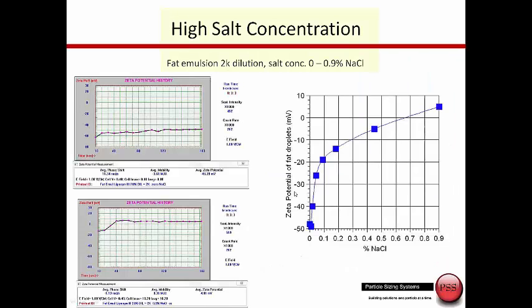This is data from a high salt concentration sample, a lipid fat emulsion. We started at very low salt concentrations where the zeta potential is down here near minus 50. Then as we increase the salt concentration, we see a decrease in the zeta potential and then a charge reversal, which is what typically has been seen and has been published for this particular sample. In the end, we end up at a positive 4.8 millivolts, and this measurement was made at 0.9% salt concentration. There's a lot of benefit to measuring this because 0.9% salt concentration is essentially physiological saline.